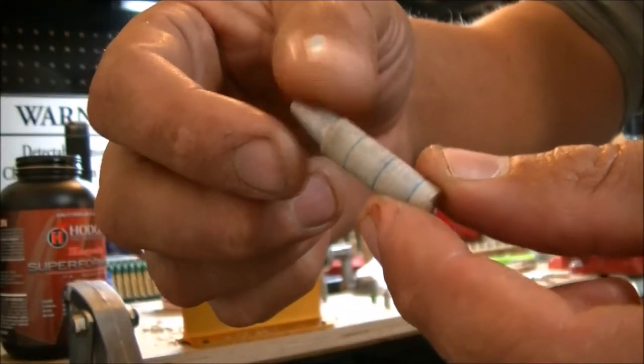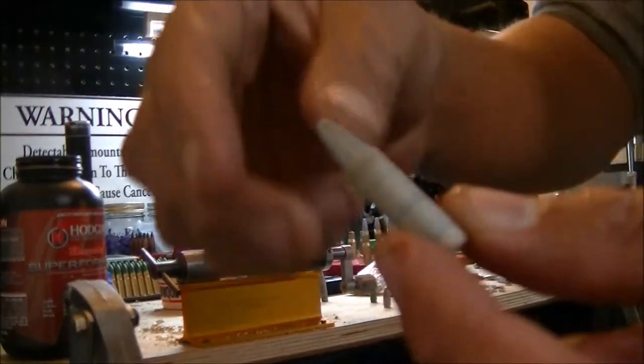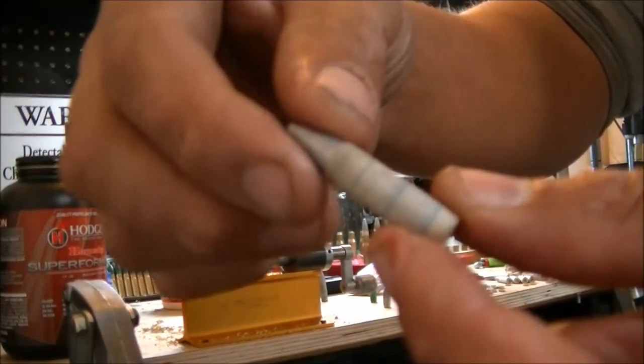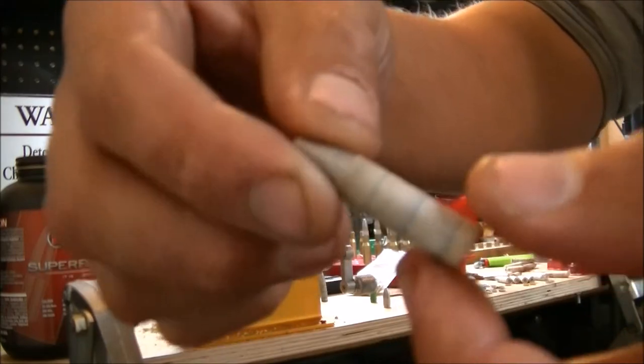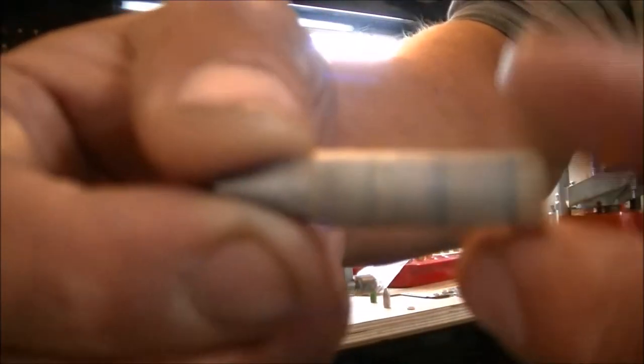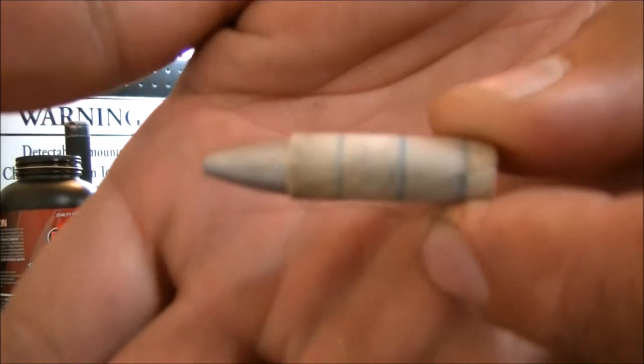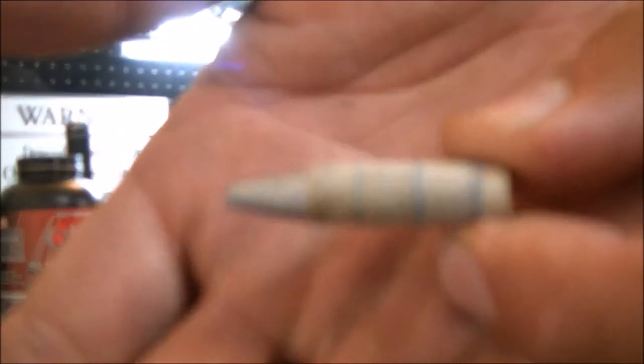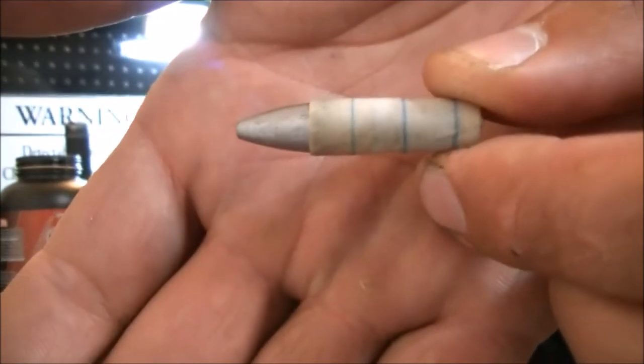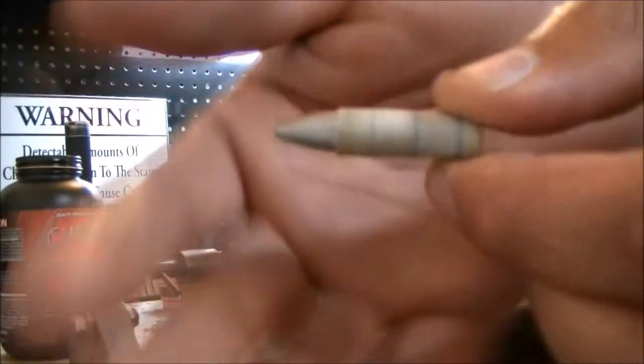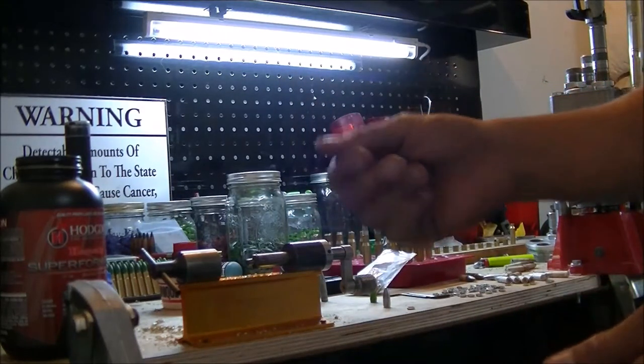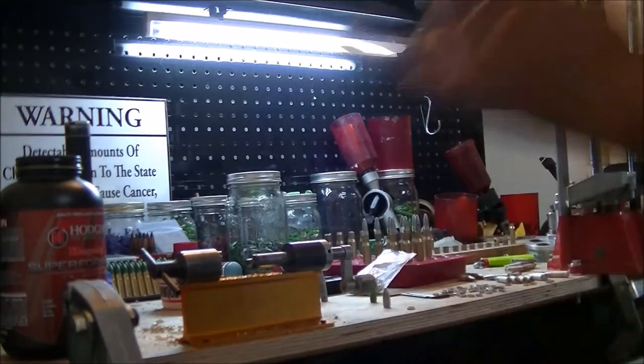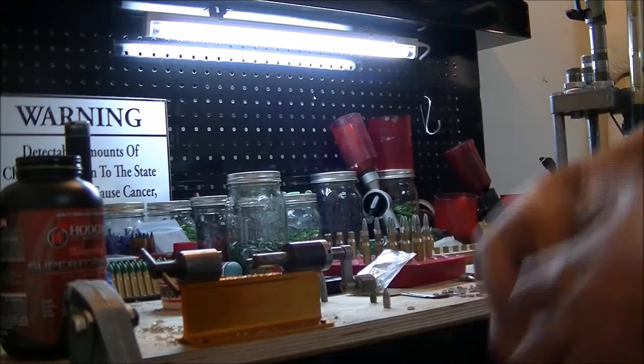These I made a couple days ago and they sat after I tumble lubed them with about 30% mineral spirits and 70% Alox. You can see they have a nice little oily shine to it and they're exactly at 309.5 and 310. These sat and air dried with just a little bit of oil residue left from the mineral spirits, and this is what I found to work pretty good for me.